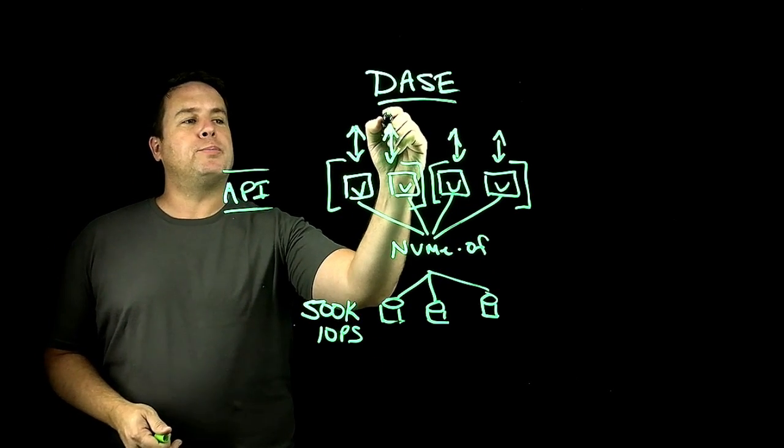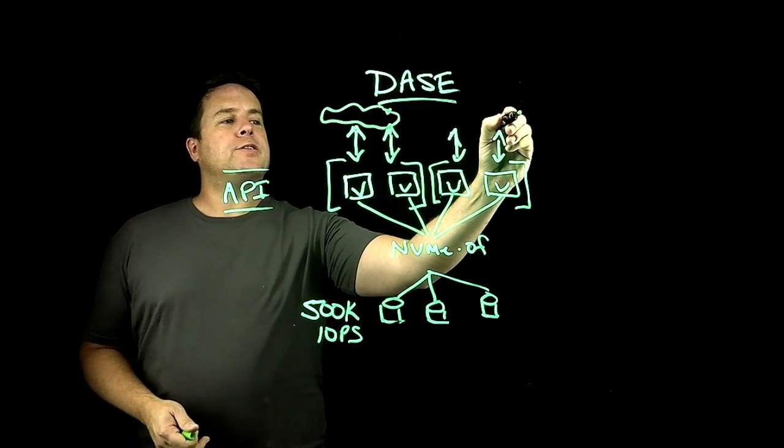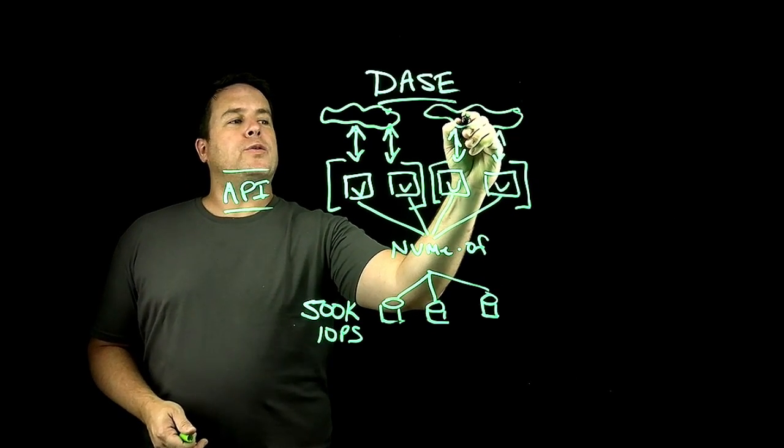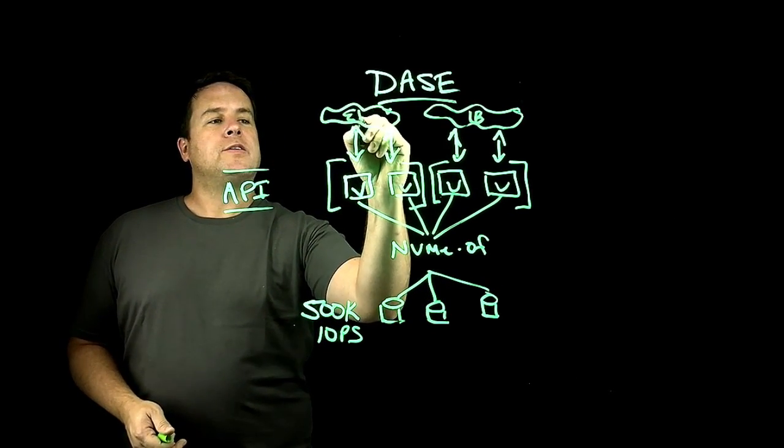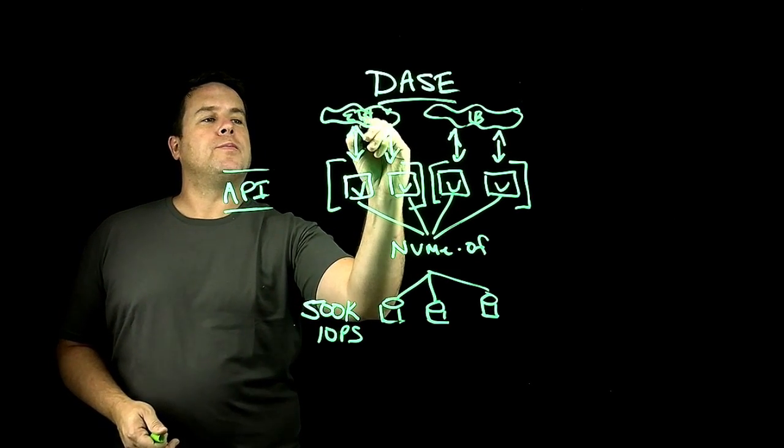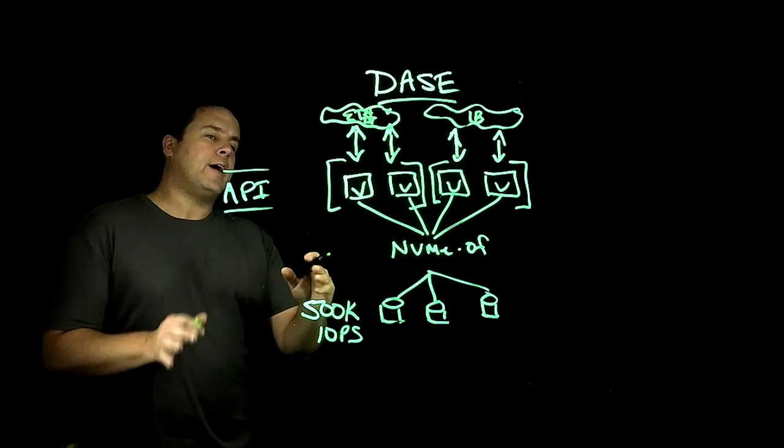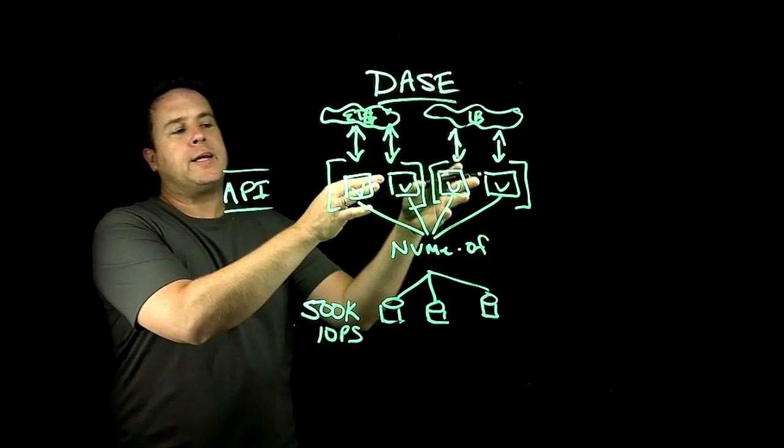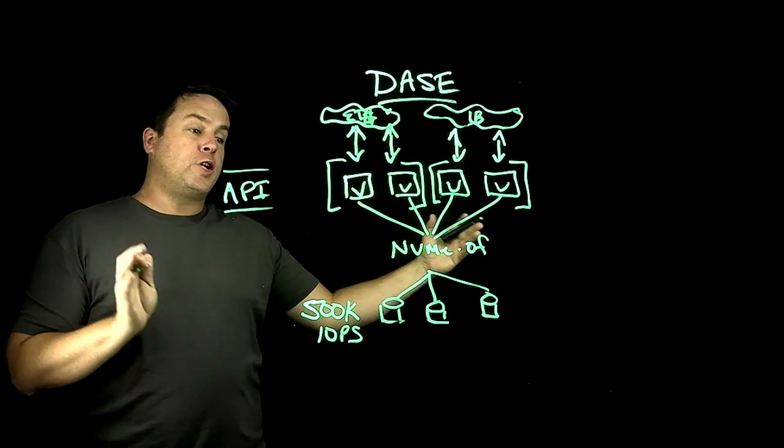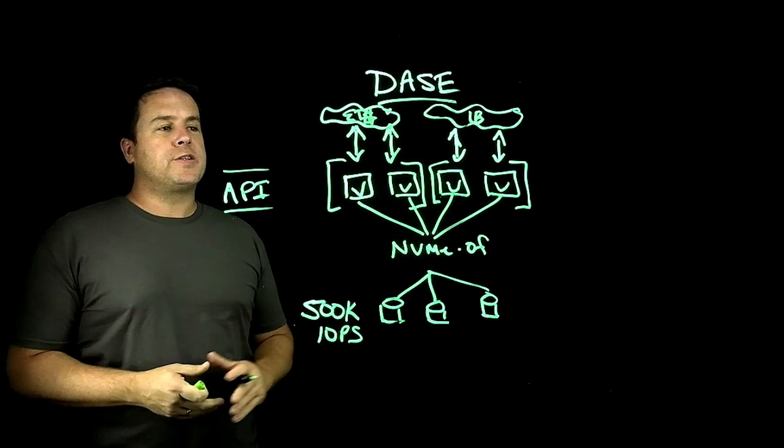One of the other really cool things about pools is it also allows you to service different networks from a common storage cluster. So let's say for example, oops, that's ethernet. Let's say you had an ethernet cluster and an InfiniBand cluster, all that needed shared access to a big file system or a big object storage system.